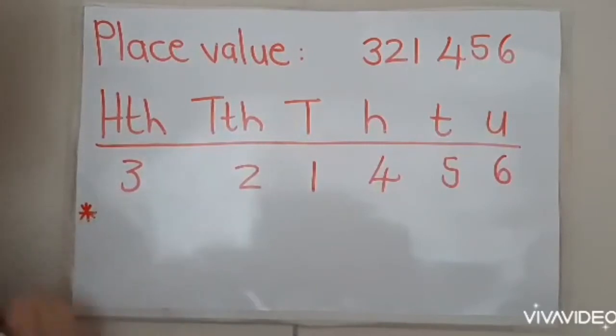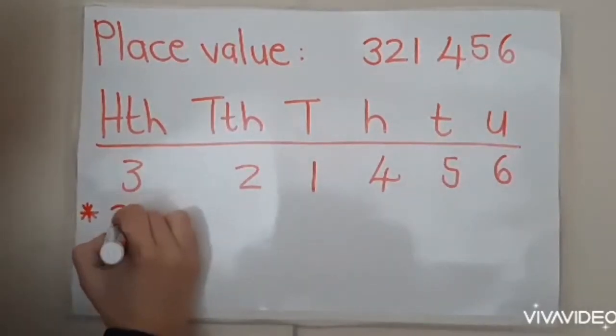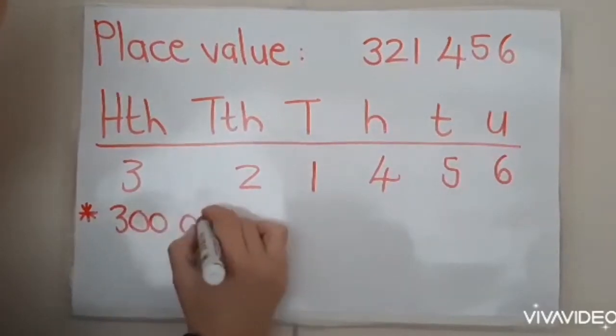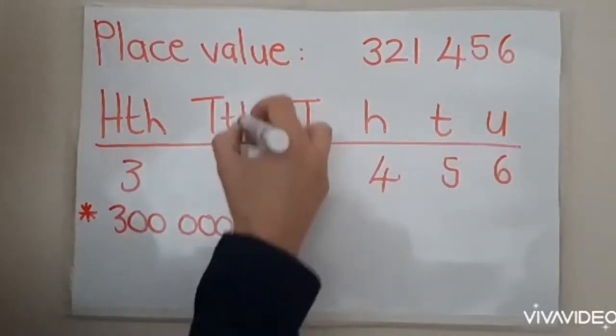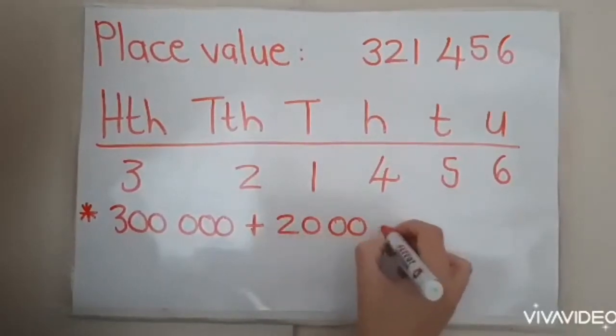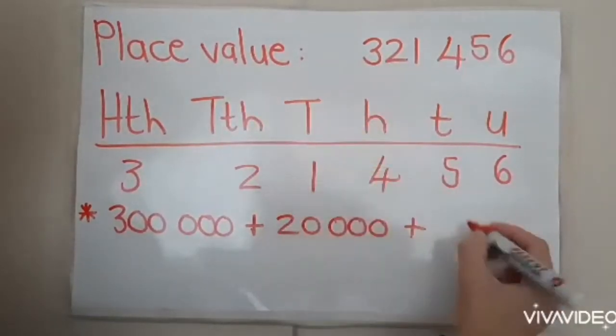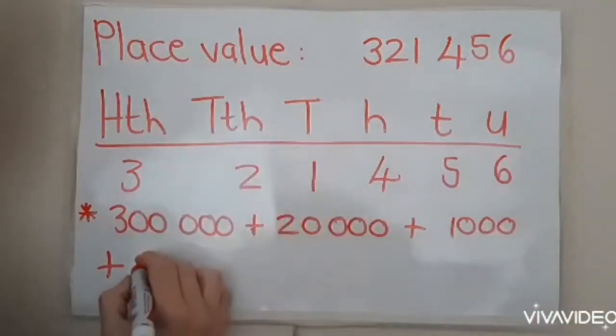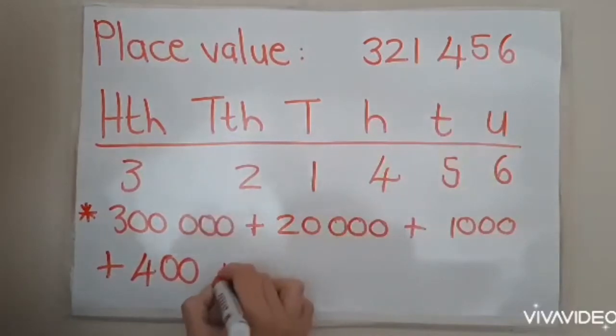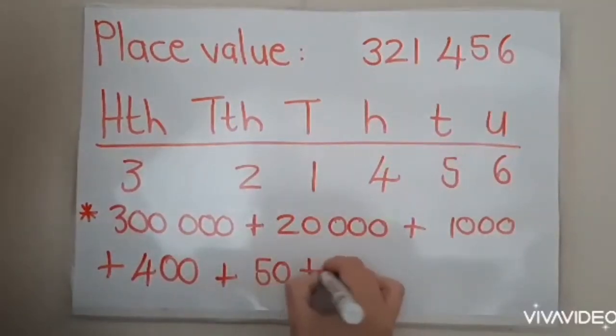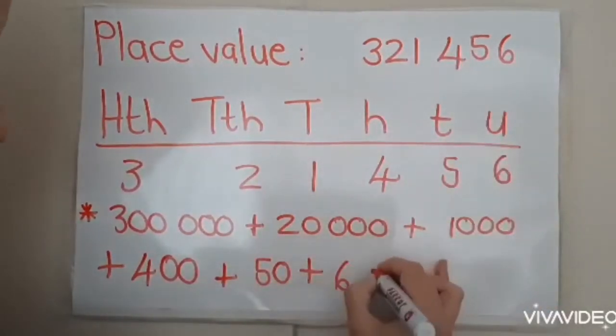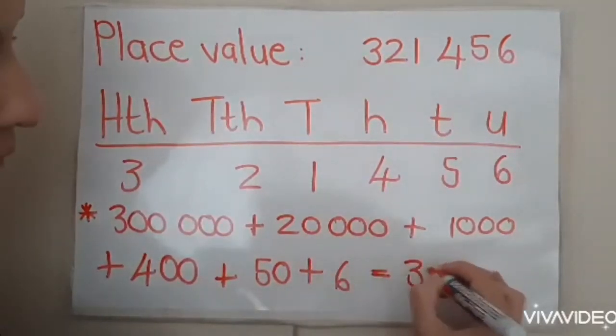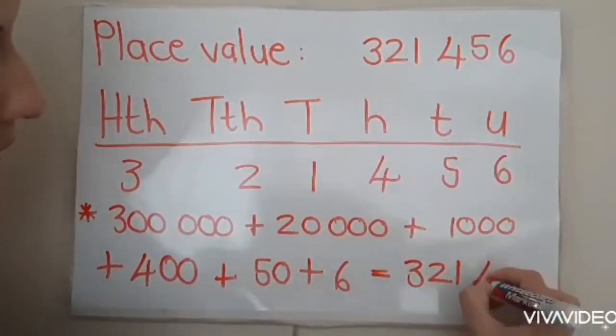Now if we need to go and put this in expanded notation, we need to write it out as follows: three hundred thousand plus twenty thousand plus one thousand plus four hundred plus fifty and plus six.